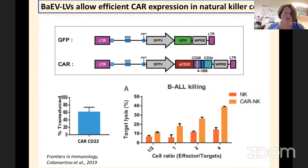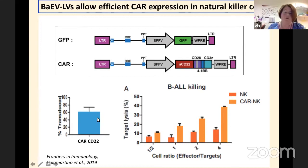We looked at expressing a CAR against CD22, which is expressed on B-cell malignancies. We achieve high transduction levels of NK cells — easily 60 to 70% for a GFP vector. These NK cells are already functional towards killing B-cell acute lymphoblastic leukemia even without a CAR, but expressing the CD22 CAR significantly augments their killing capacity.